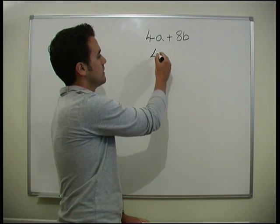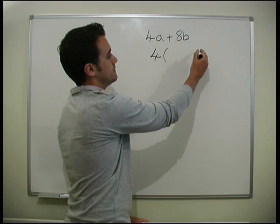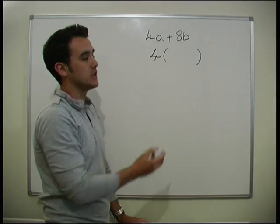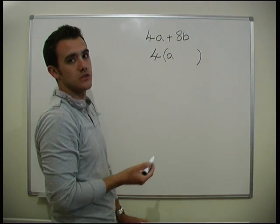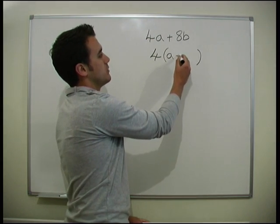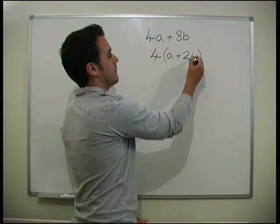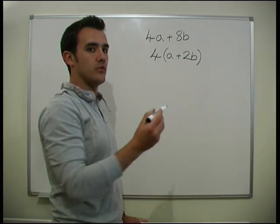So, what we do is we put that factor outside of some brackets. And what needs to go in those brackets? 4 times by a. OK? 4 times what do we need to get to 8b? We need to put a 2b in there. So, basically the exact opposite of what we've just done.